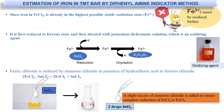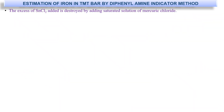Ferric chloride is reduced by stannous chloride — the reducing agent — in the presence of hydrochloric acid to ferrous chloride. A slight excess of stannous chloride is added to ensure complete reduction of FeCl₃ to FeCl₂.